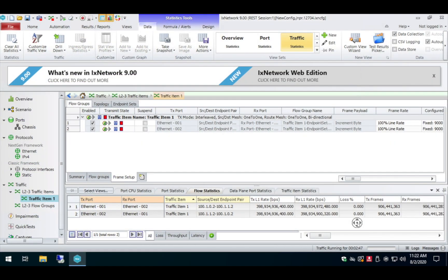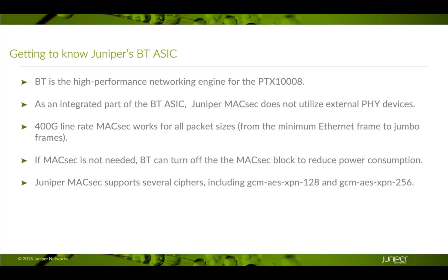The most important piece of information: at all three frame sizes ranging from 66 bytes to 9000 bytes, the PTX 1008 did not drop a single frame when doing MaxSec. The BT-ASIC is the high-performance networking engine that drives the PTX 1008 modular chassis — MaxSec is integrated natively into the ASIC. Unlike many competitors, Juniper MaxSec does not utilize external PHY devices. The BT-ASIC can perform inline MaxSec for all packet sizes at 400G line rate. If MaxSec is not needed, the BT can turn off the MaxSec block to reduce power consumption. Juniper MaxSec supports several ciphers including GCM-AES-XPN-128 and GCM-AES-XPN-256. As you saw in this demo, we used the XPN-256 cipher.